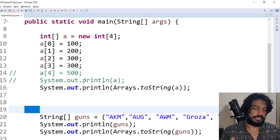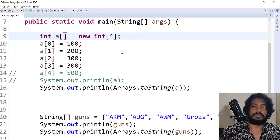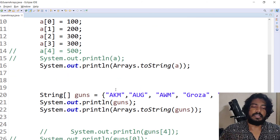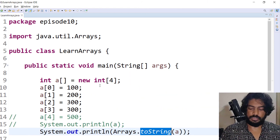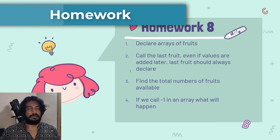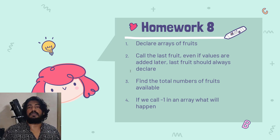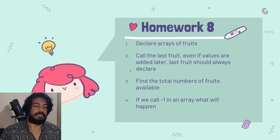So in summary, you can declare arrays of string, integer, or any class type. The syntax is: data type, square brackets, variable name — for example int[] a. You can directly print using Arrays.toString() to display values. For practice, declare an array called fruits with 5 values, then change it to 7 values. You can subscribe and share feedback — suggestions are open. Thanks for watching, see you in the next one.